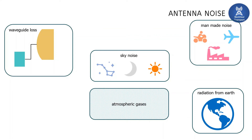Antenna noise depends on the noise temperature. The noise figure formula gives 75 K for 1 dB and 290 K for 3 dB, where K is the noise temperature. The noise temperature is affected by several factors: waveguide noise, sky noise, atmospheric gases such as oxygen molecules, man-made noises, and radiation from the earth — all of which change the noise temperature and ultimately the noise figure.